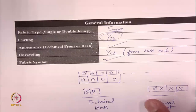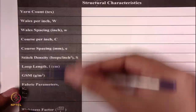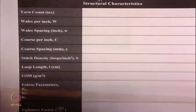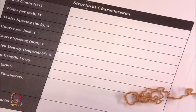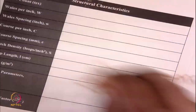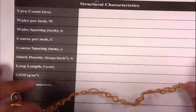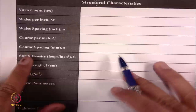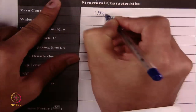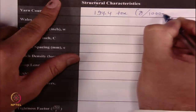Now, the most important part — structural characteristics. The first is the yarn used to make the fabric structure. The yarn used in making this particular fabric had a tex of 194.4. Finding yarn count is easy — you can follow any textile standard. In practice, you take the weight, find the length, and take their ratio. The yarn tex was 194.4 tex — tex is defined as grams per 1000 meters of yarn.